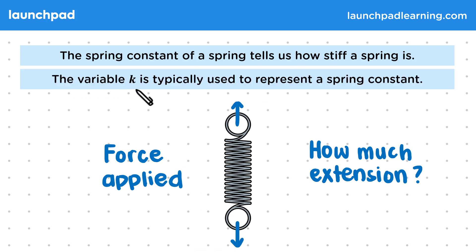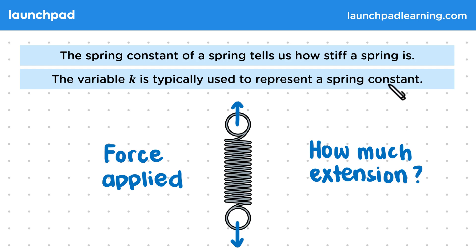The variable k is typically used to represent a spring constant, but we can also define spring constants for objects that aren't springs. This calculation can only be done if the spring is not overstretched, so it's not past the limit of elastic deformation.